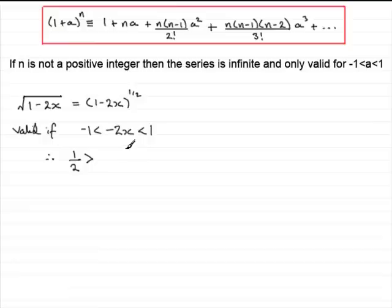Minus 2x divided by minus 2 is going to be simply x, and 1 divided by minus 2 is going to be minus a half. But again, because we're dividing by a negative number, reverse the inequality sign. We should always have the smallest number on the left-hand side, so we get minus a half is less than x, which is less than a half. In other words, x lies between minus a half and a half for the binomial expansion of the root of 1 minus 2x to be valid.